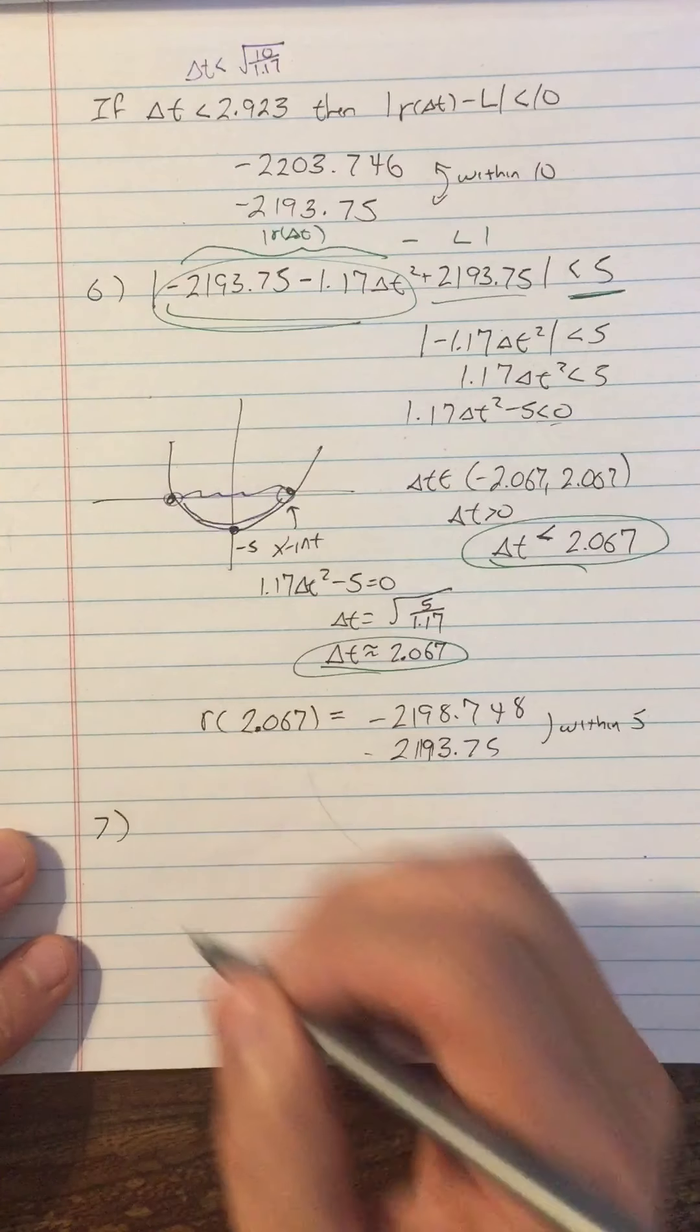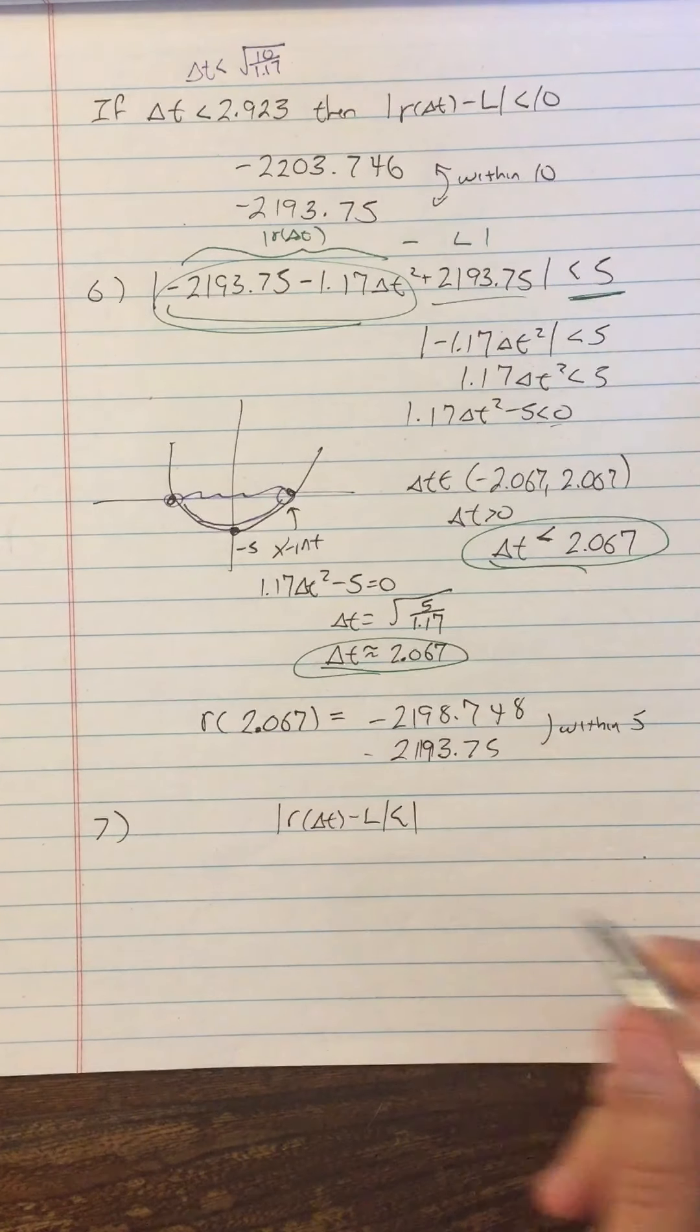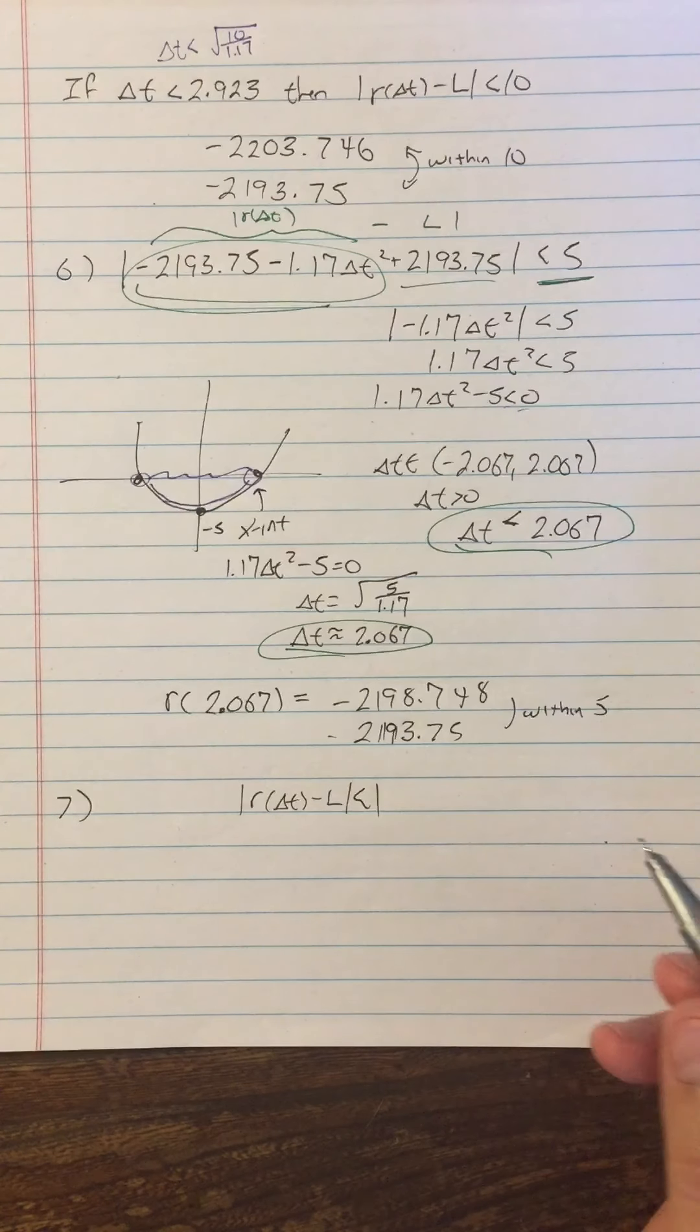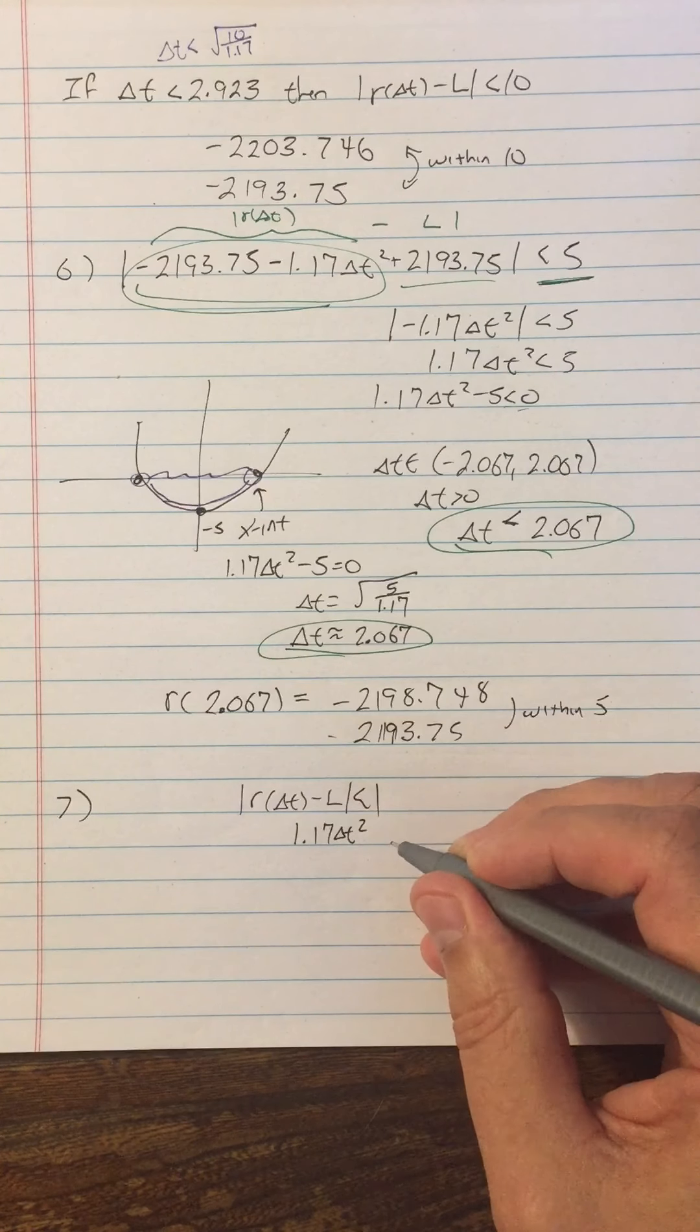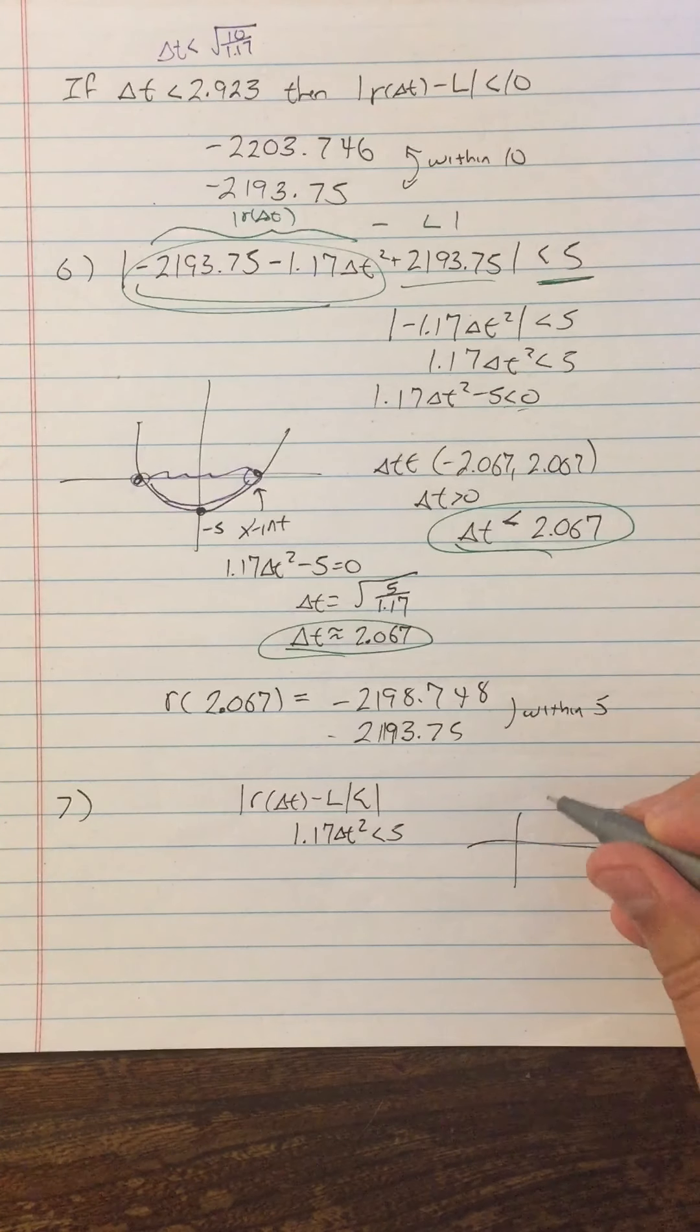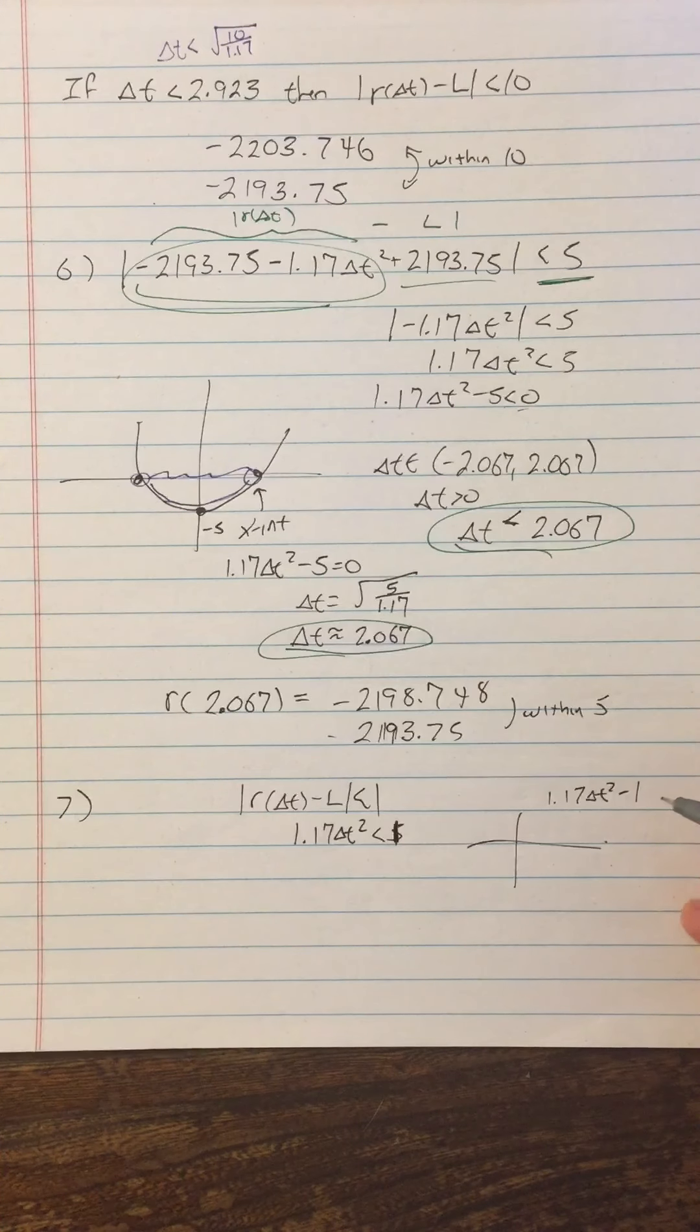If I want to be within one of the limit, so let's just go ahead and solve r of delta t minus l is less than one. Again, if you haven't done this, you should do it on your own first. But let's cut to the chase. We know what the pattern is here. We know we're going to end up with 1.17 delta t squared is less than one. Delta t squared minus one is less than zero.